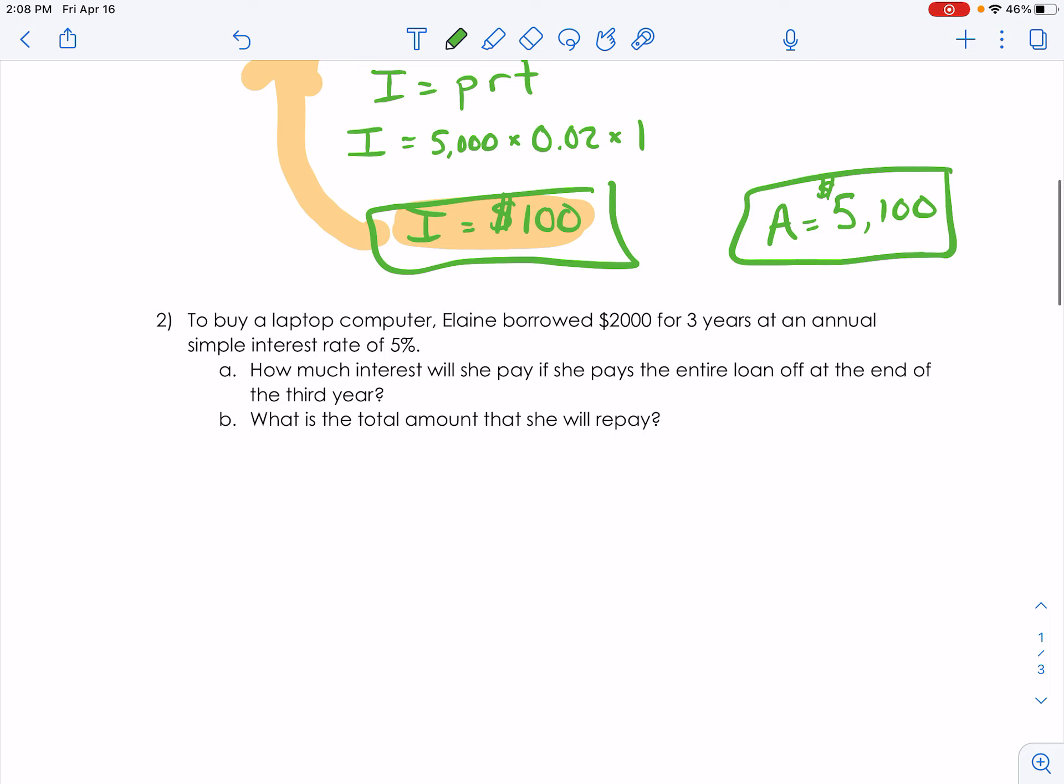Number two says to buy a laptop computer, Elaine borrowed $2,000, so that's our principal. Three years, that's our time. At an annual simple interest rate, so it's simple interest. The rate is 5%.